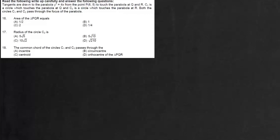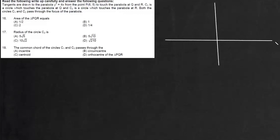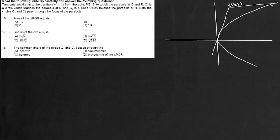The question is: tangents are drawn to the parabola y² = 4x from the point (6,5) to touch the parabola at Q and R. C1 is a circle which touches the parabola at Q, and C2 is a circle which touches the parabola at R. Both circles C1 and C2 pass through the focus of the parabola. We have this parabola y² = 4x, and from point P(6,5) we draw two tangents touching at Q and R.